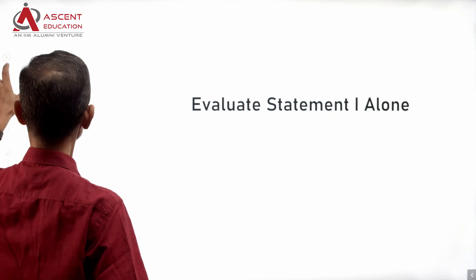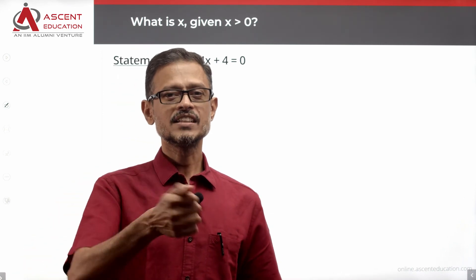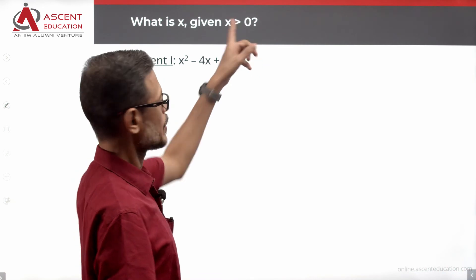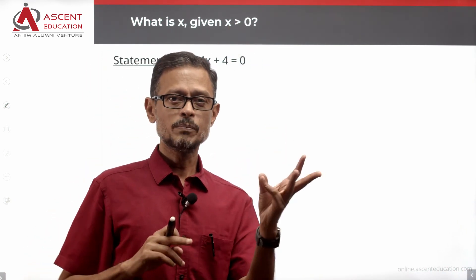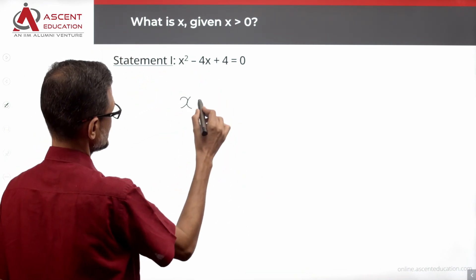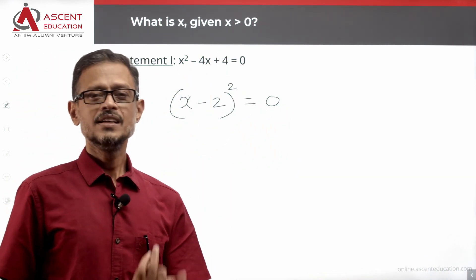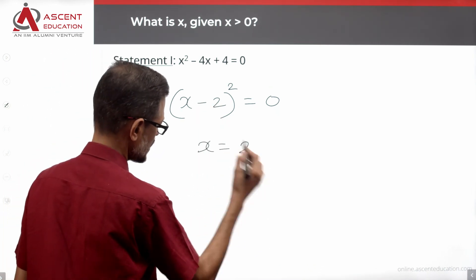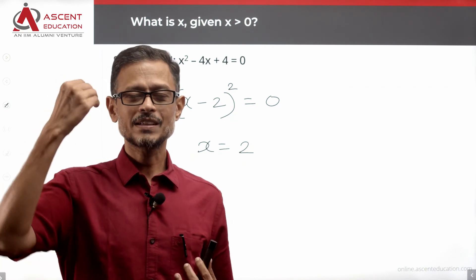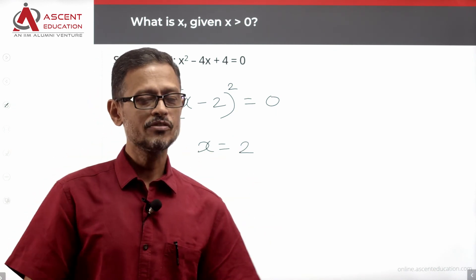Let's take a look at Statement 1 to see whether it is sufficient. Statement 1 is: x² - 4x + 4 = 0. This factors as (x - 2)² = 0, so x - 2 = 0, meaning x = 2. There is only one value. So from Statement 1, we are able to find a unique value for x.